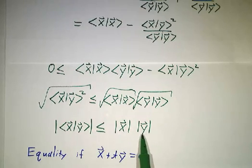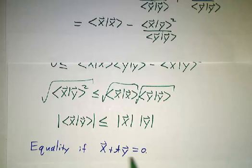And we had equality if and only if x plus t y was 0. In other words, if they're linearly dependent, if x and y are pointing in exactly the same direction or are negatives of each other, then you can get equality. Otherwise, it's inequality.